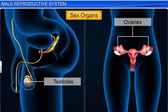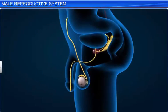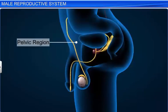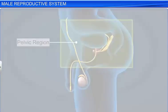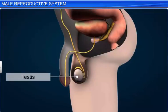Let us learn about the organs of the male reproductive system. The male reproductive system is located in the pelvic region. It includes the testes, accessory ducts, accessory glands, and external genitalia.